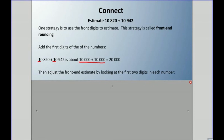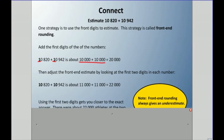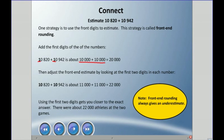We can adjust the front-end estimate by looking at the first two digits of each number. So 10,820 is pretty close to 11,000, and 10,942 is also close to 11,000 — add those together and you get 22,000. Using the first two digits gets you closer to the exact answer: about 22,000 athletes at the two games. Note that front-end rounding always gives an underestimate because you leave all other digits alone.